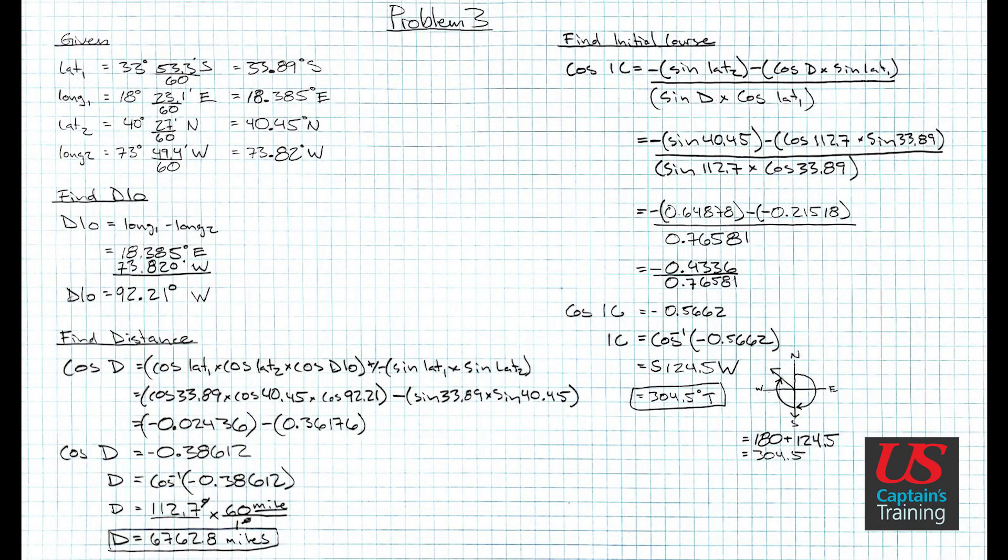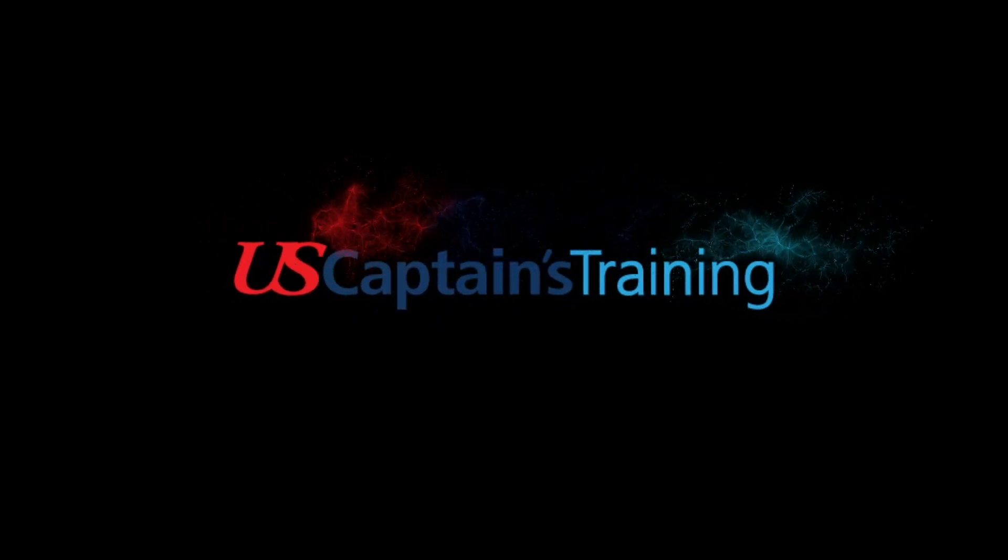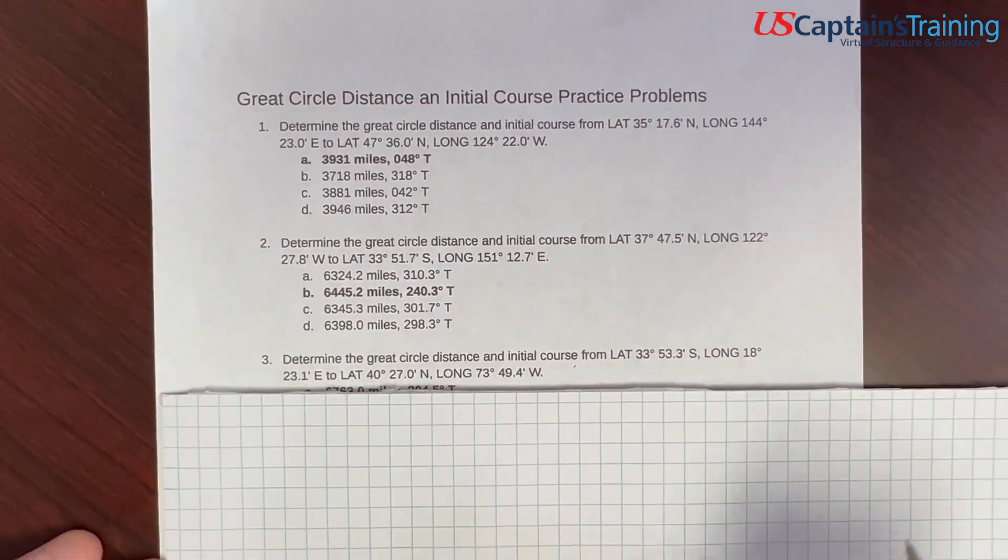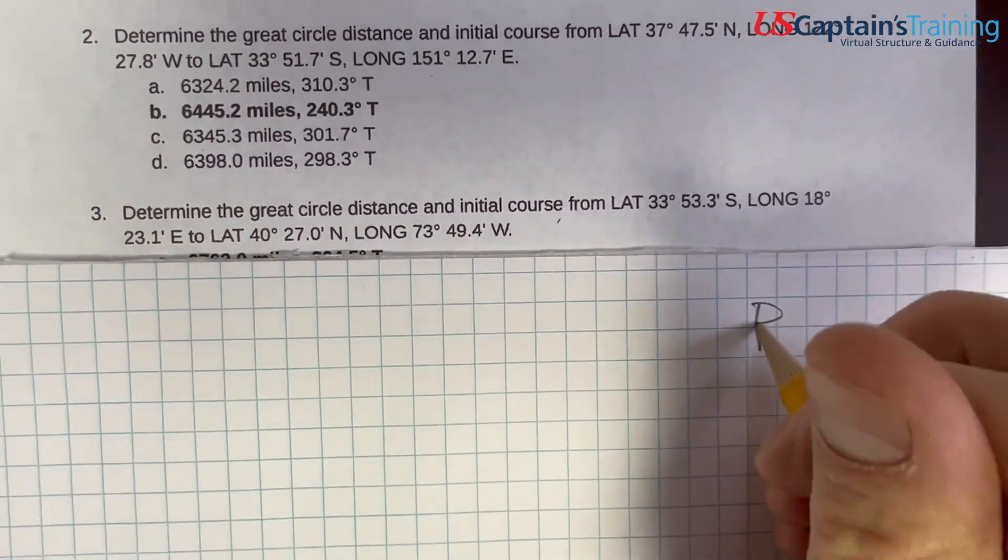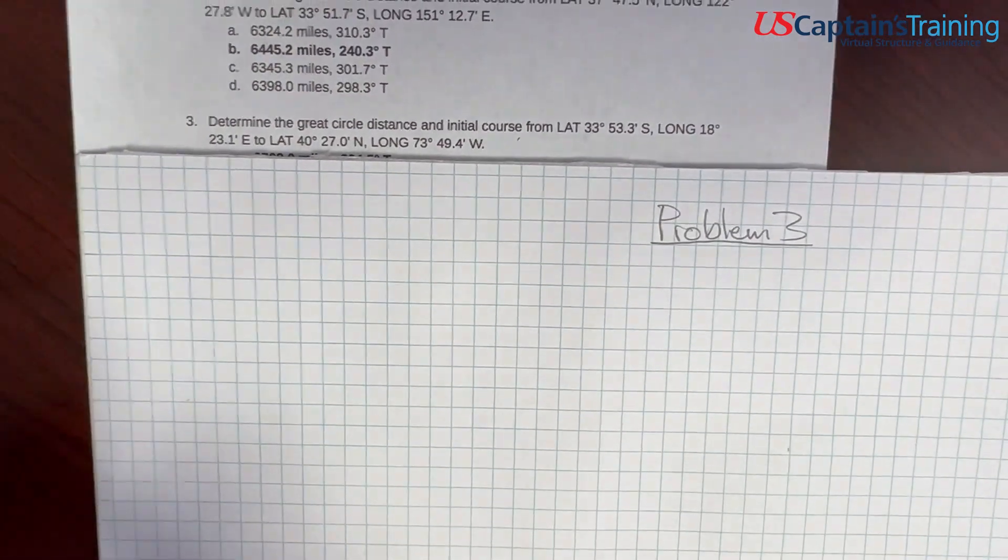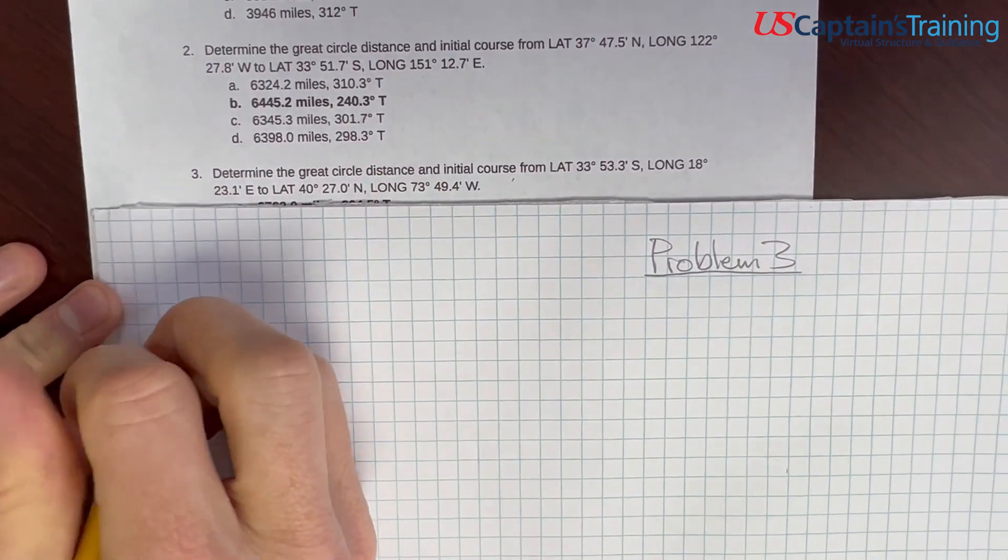Hey, Neil Smith here with U.S. Captains Training, and welcome to Great Circle Sailing Problem 3. We're solving for initial course and distance. This problem's interesting because we cross the equator and the prime meridian. So let's jump right into it.